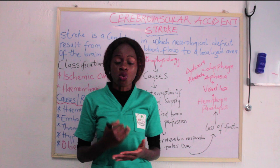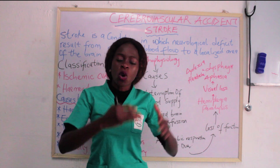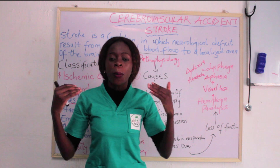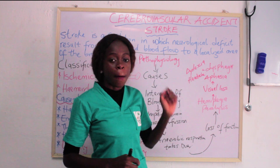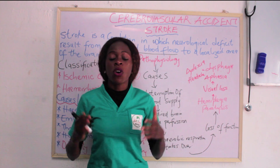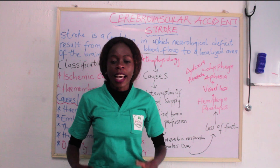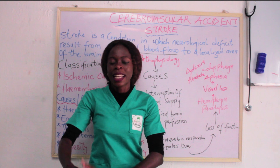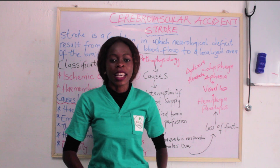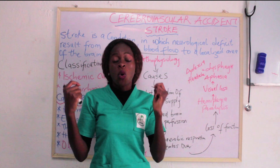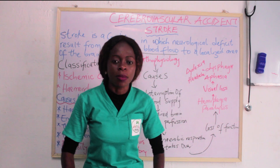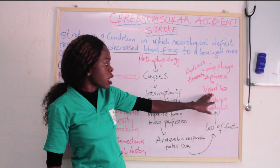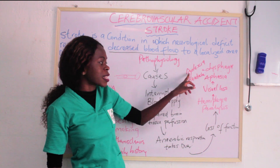The signs and symptoms of stroke depend on which part of the brain is affected. The first is paralysis, which comes in different types: paraplegia (both legs paralyzed), hemiplegia (one side affected — e.g., right hand and right leg, or left hand and left leg), and quadriplegia (both upper and lower limbs affected). Other signs and symptoms include visual loss, aphasia, dysphagia, dyslexia, and headache.